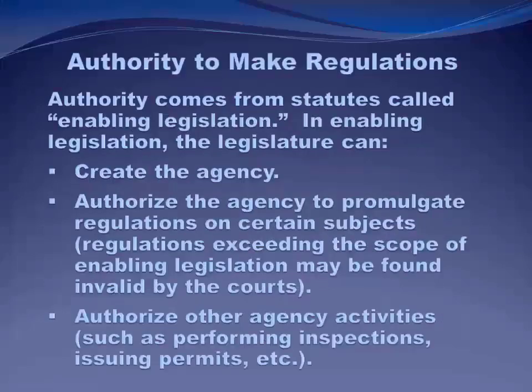Where does the authority come from for agencies to make law? It isn't something you would necessarily at first think they could do, given the separation of powers in the Constitution. It comes from Congress and it's called enabling legislation. In the enabling legislation, Congress creates an agency and authorizes it to promulgate regulations on certain subjects. If the agency goes ahead and promulgates regulations beyond its enabling legislation, the regulation will be found invalid by a court.